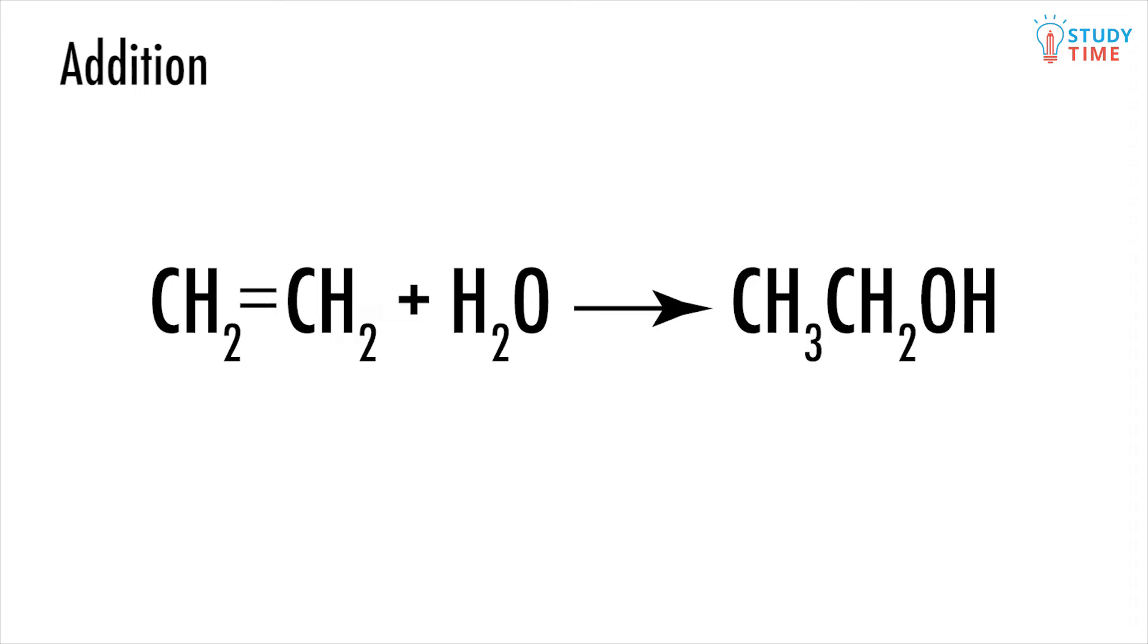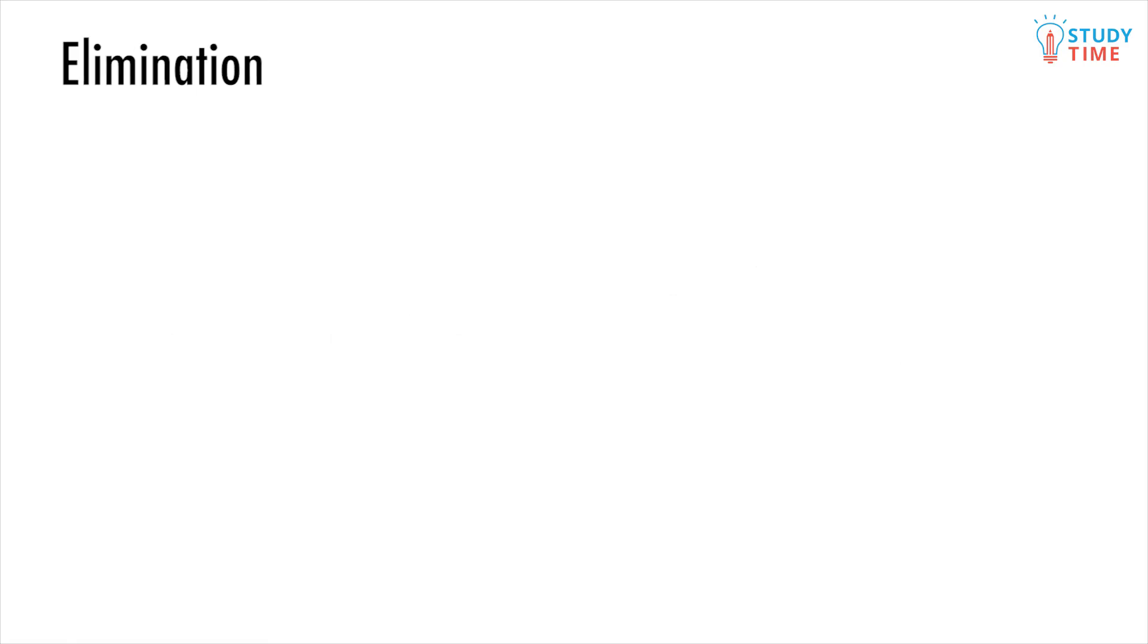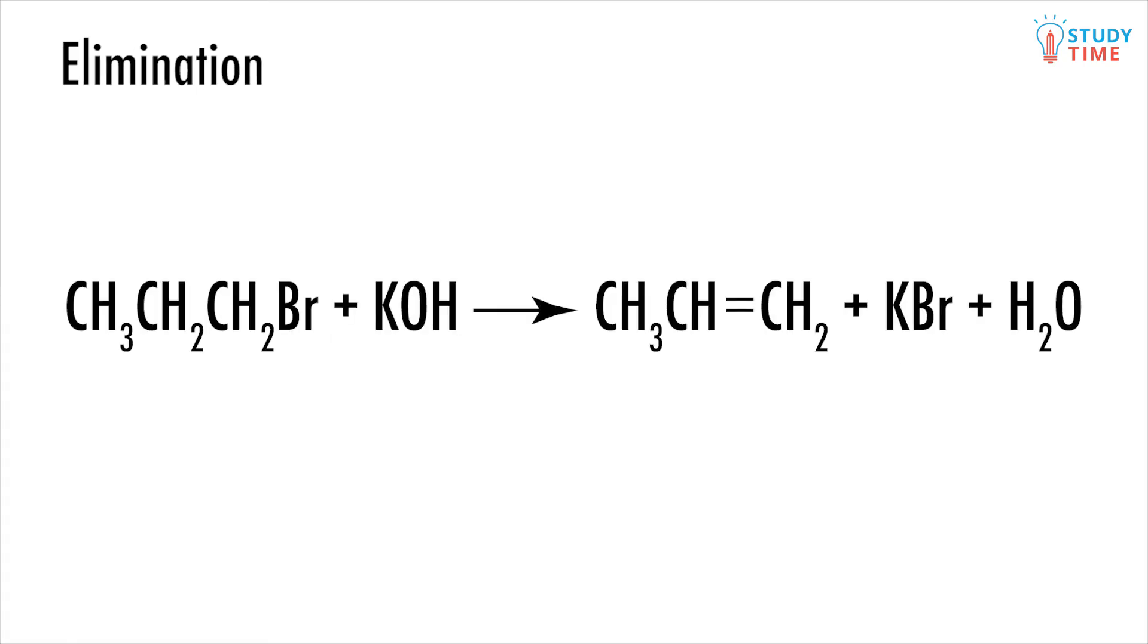But can we do the opposite? What if we wanted to create an alkane with a double bond? The opposite of addition, as you can probably guess, is an elimination reaction. In an elimination reaction, two groups attached to two adjacent carbons get removed and the carbons form a double or triple bond using their now spare bonds.